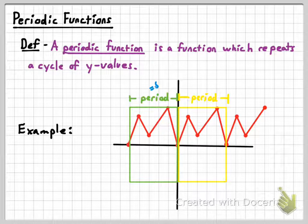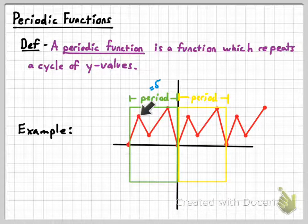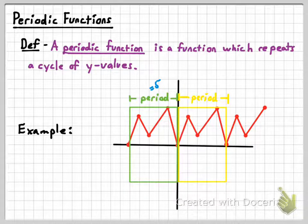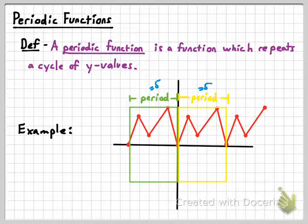Here the length turns out to be five — we're going from negative five to zero, that's five units over which the entire cycle occurs. Then over the next five units the next cycle occurs, and so forth. So the period is five.